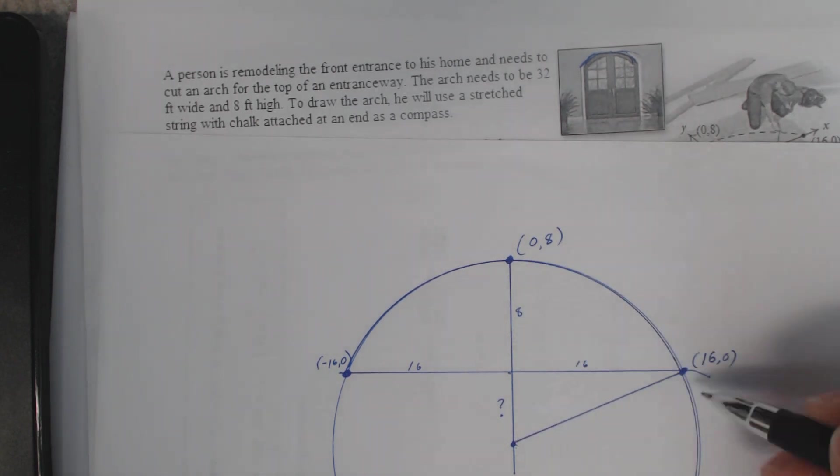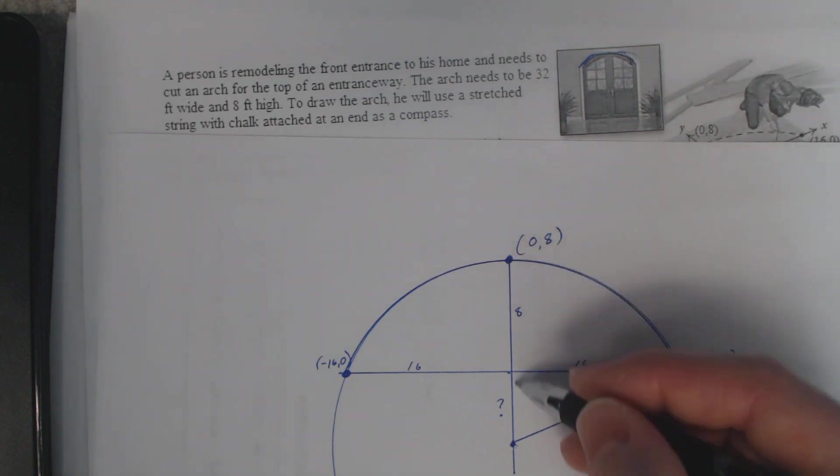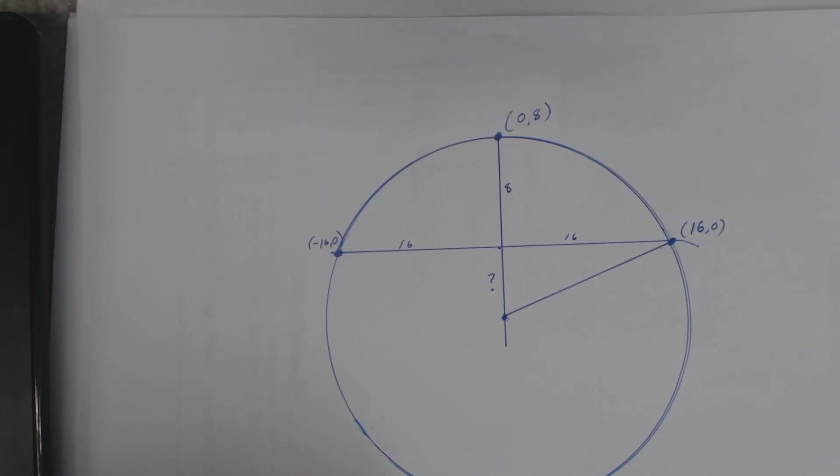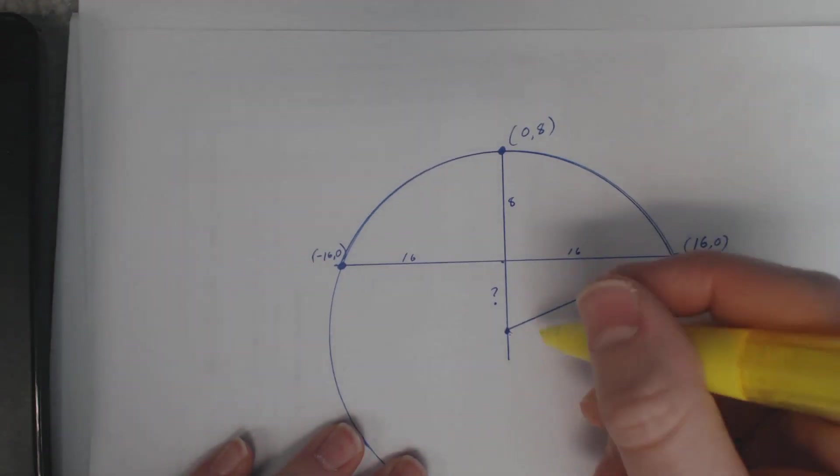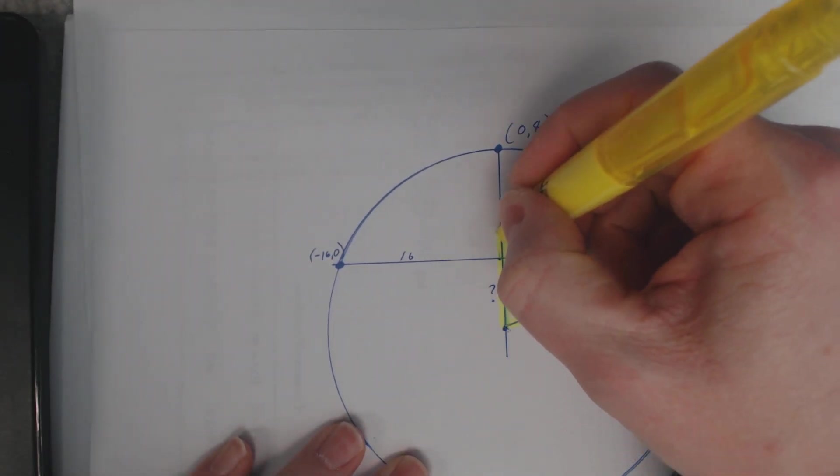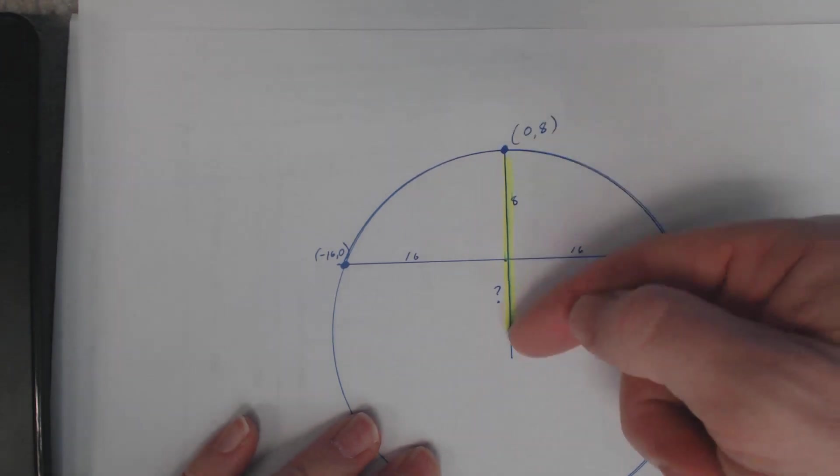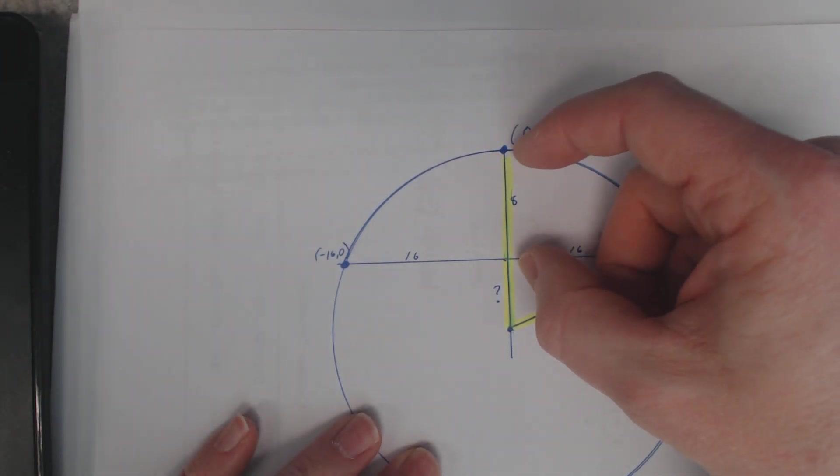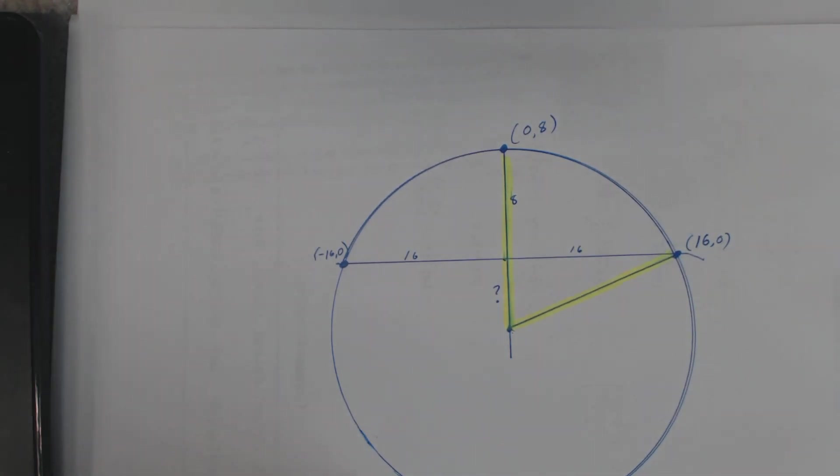So this and this is the same distance, right? Let me highlight that so you make sure we're talking about this. This is the radius, and this is also the radius. Those are both the same values. So thing is, I know the radius is at least 8 feet, but I don't know what this other piece is right here.